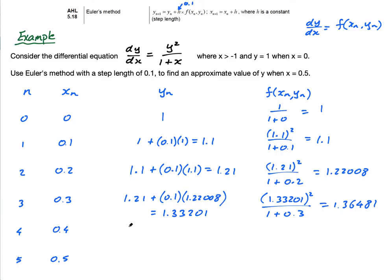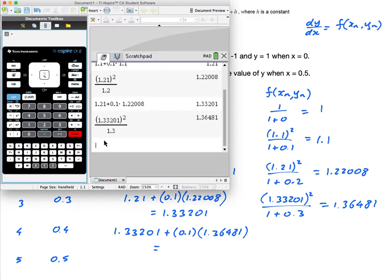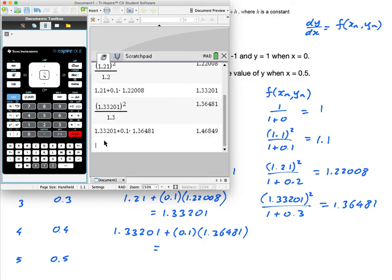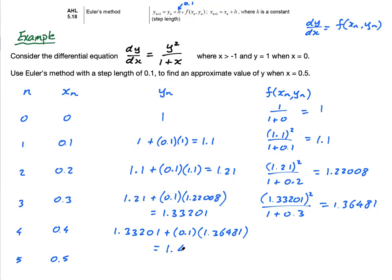Next one. Next y is this. So, it's 1.33201 plus 0.1 times this. 1.36481. And this equals. 1.33201 plus 0.1 times 1.36481. 1.46849. 1.46849.